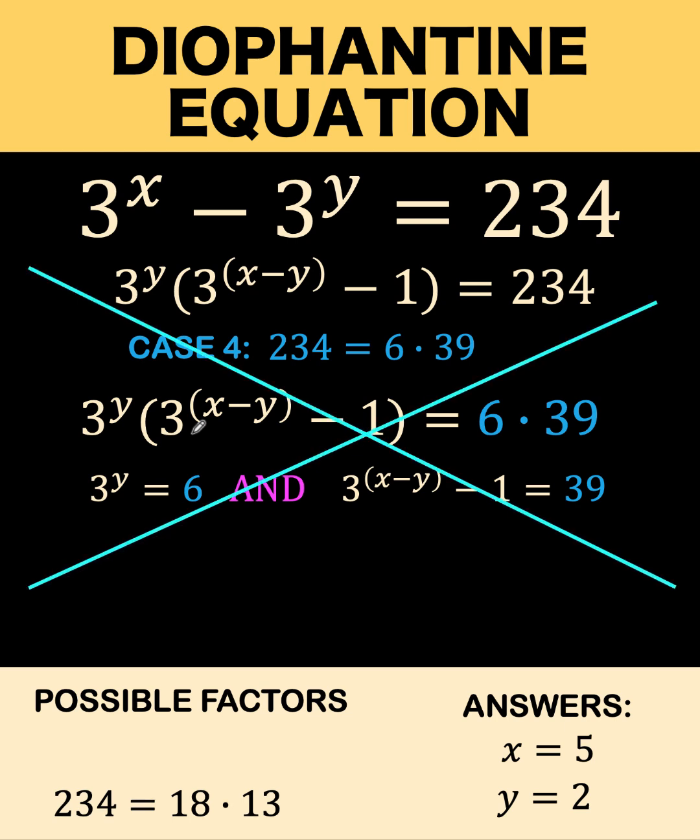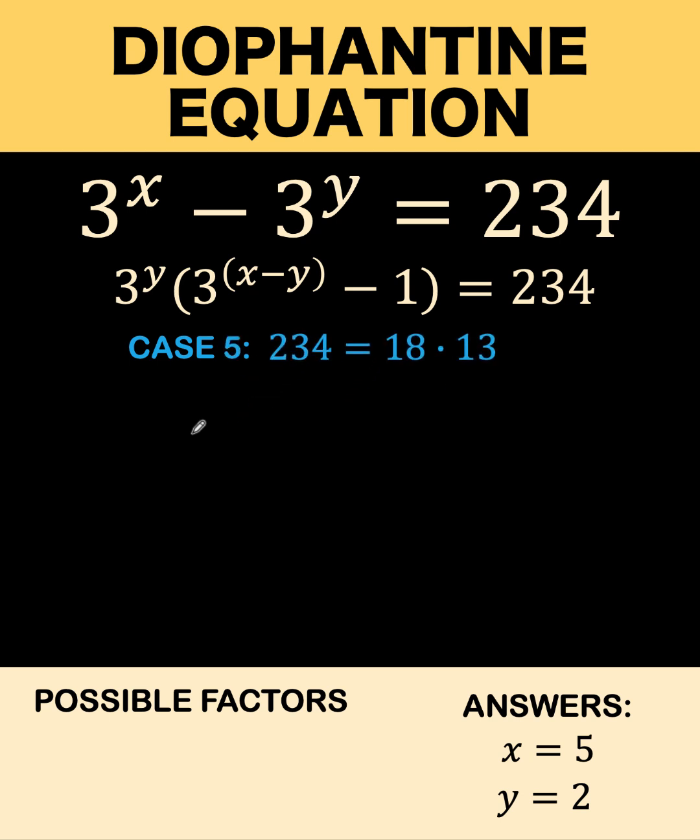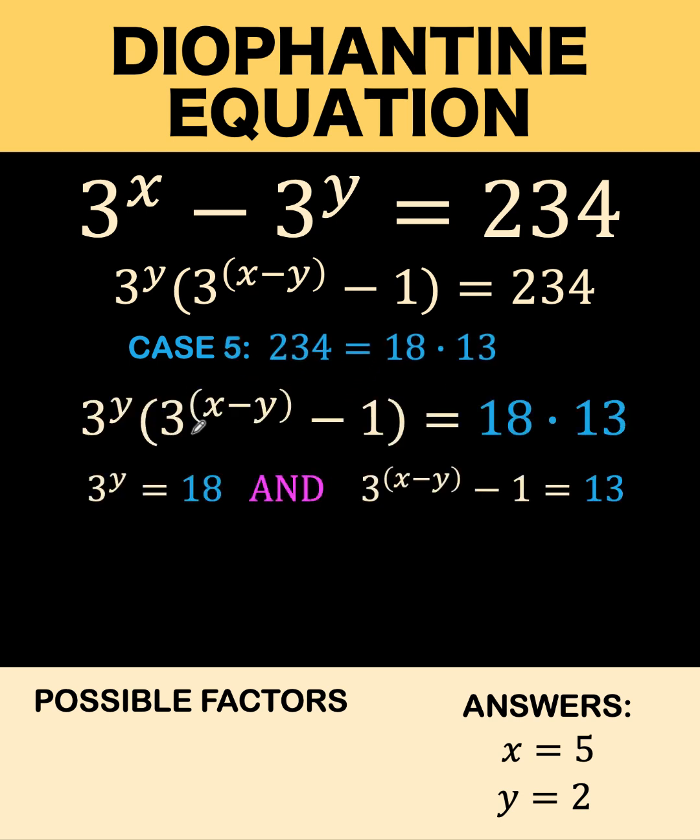And so we move to the last case when the first is equated to 18 and the second is equated to 13. Then let's check if y can be an integer here. 3 to the first is 3, 3 to the second is 9, 3 to the third is 27. 18 is between 9 and 27. So y must be between 2 and 3. So again, y is not an integer. So this is not also the answer. And therefore, after exhausting all these different possible cases,